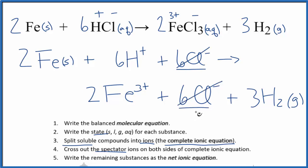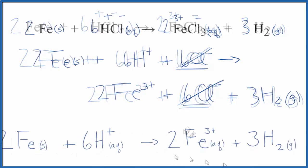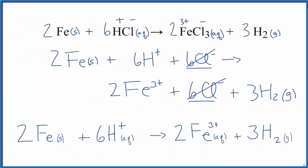But everything else is different. And that gives us the net ionic equation. And we can write it like this. So this is the net ionic equation for Fe plus HCl, iron plus hydrochloric acid.